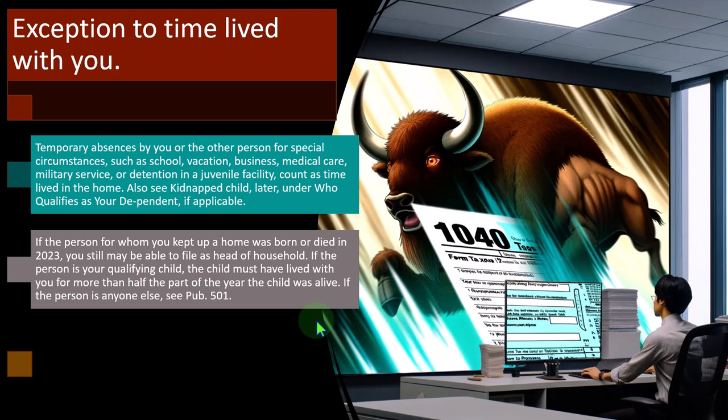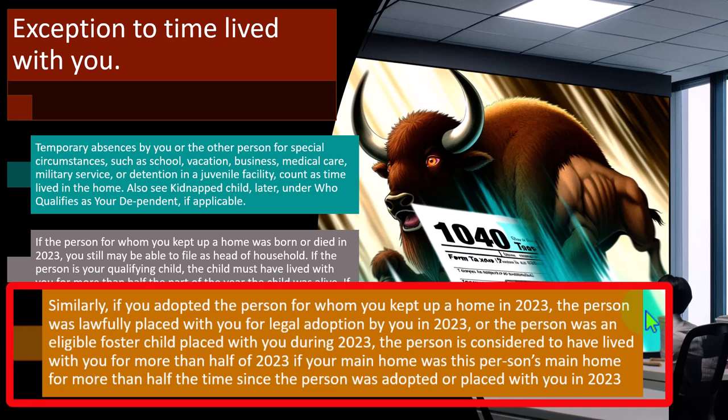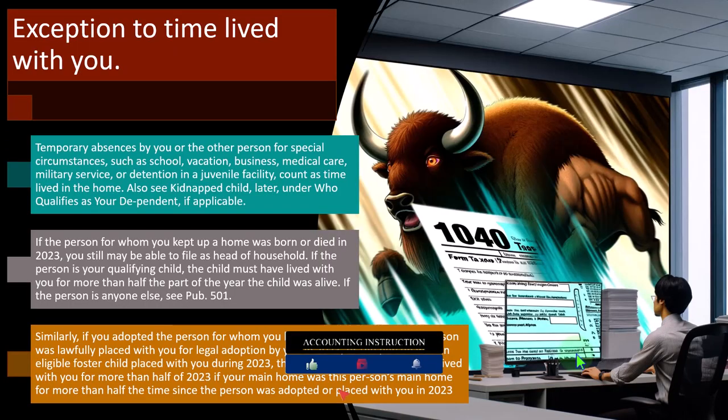Similarly, if you adopted the person for whom you kept up a home in 2023, the person was lawfully placed with you for legal adoption in 2023, or the person was an eligible foster child placed with you during 2023, that person is considered to have lived with you for more than half of 2023 if your main home was their main home for more than half the time since they were adopted or placed with you. The country being as large as it is, these exceptions have come into play, so the applicable process can be researched.